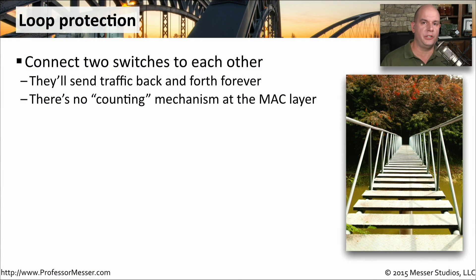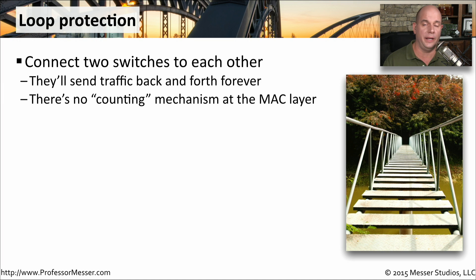When it comes to loop protection, our ethernet frames aren't very smart at all. If we were to connect two switches to each other and then connect those switches to each other again, we would effectively create a loop where traffic, especially broadcast and multicast, would begin going back and forth in a circle between these two devices over and over again. And there's no mechanism in place at that MAC layer of ethernet to be able to remove these from the network.